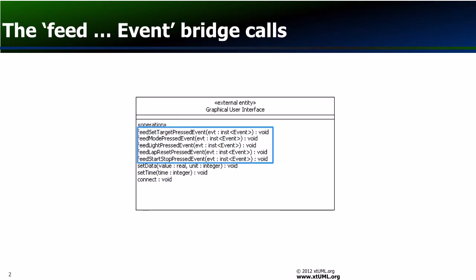Now, what about those bridge calls beginning with feed? You may recall we stated in the introduction that external entities are best used for call and return APIs. This turns out to be an inconvenient limitation when it comes to our GPS watch.